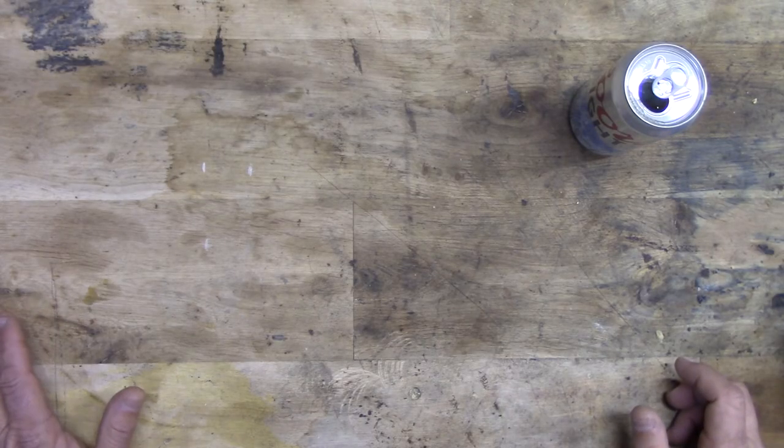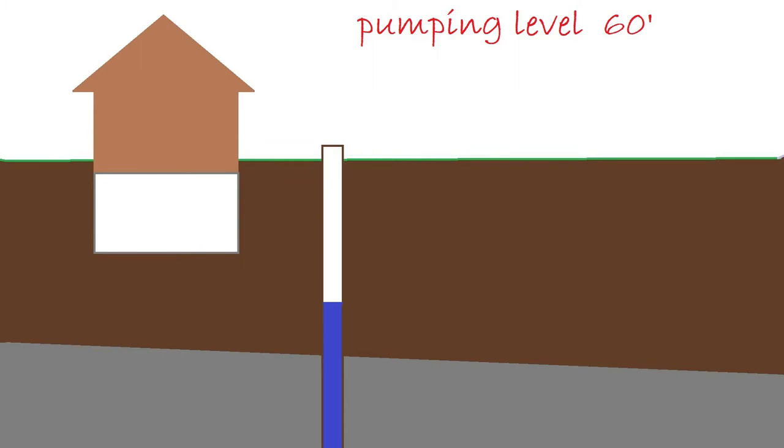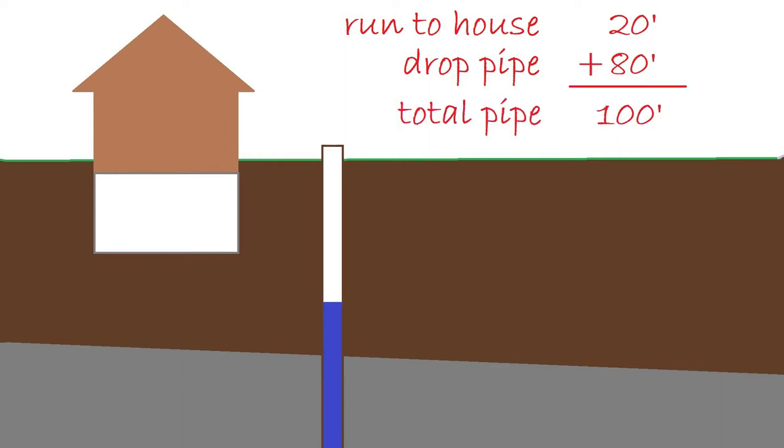Next we're going to figure out how much pipe we're going to need. Since we know the pumping level is 60 feet, all we have to do is set the pump deeper than that. 20 feet below the pumping level is usually a comfortable buffer. So let's set the pump on 80 feet of inch and a quarter schedule 80 PVC. From the well to the control room in the house we'll say is 20 feet. Adding up the run to the house and the drop pipe length we get 100 feet. Our friction loss is 9.06 feet of head per 100 feet of pipe. So since we have 100 feet of pipe, our friction loss is 9.06 feet of head.